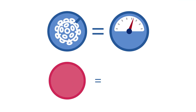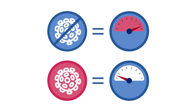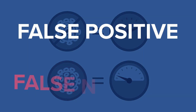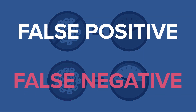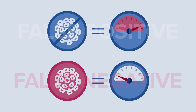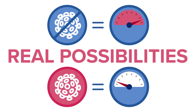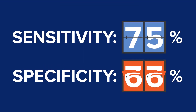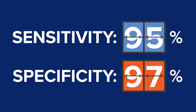Sometimes antibody tests can generate information that's wrong. We call these results false positive or false negative. Both a false positive and a false negative are real possibilities we need to take into account for any test. But such results also give us an understanding of a test's accuracy rates around sensitivity and specificity.